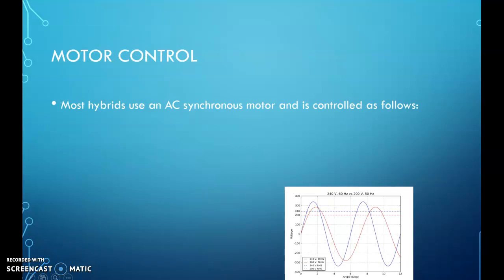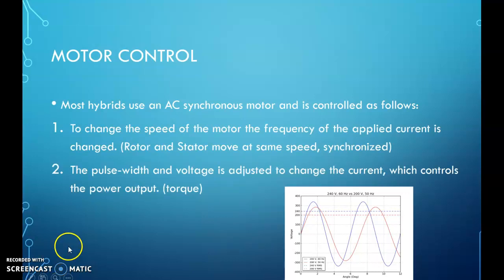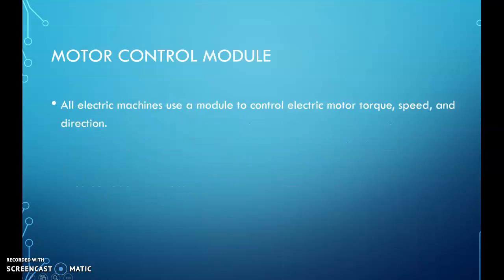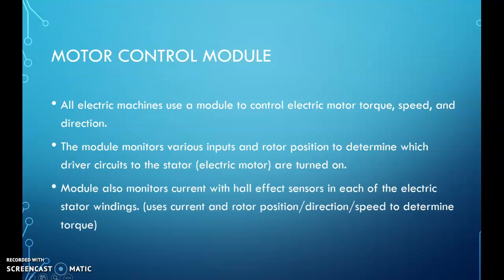As far as motor controls, how do we control this AC synchronous motor? Basically, to change the speed of the motor, we change the frequency and change the torque. Basically, the current will change the torque. I'll show you a picture of this in a little bit. We'll walk through a Toyota simulator that will give you a graph on frequency and current to change speed and torque. The electric module to control the torque, speed, direction is very complicated. It's got to know the position of the rotor, the magnetic field in order to know where to start the rotating magnetic field in the stator. Pretty complicated.